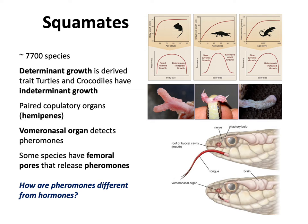Other things that squamates have — not all species — is a vomeronasal organ specifically designed to detect pheromones. There's a lot of pheromonal communication going on in squamates. Some species of lizards, for example, have femoral pores that produce pheromones.